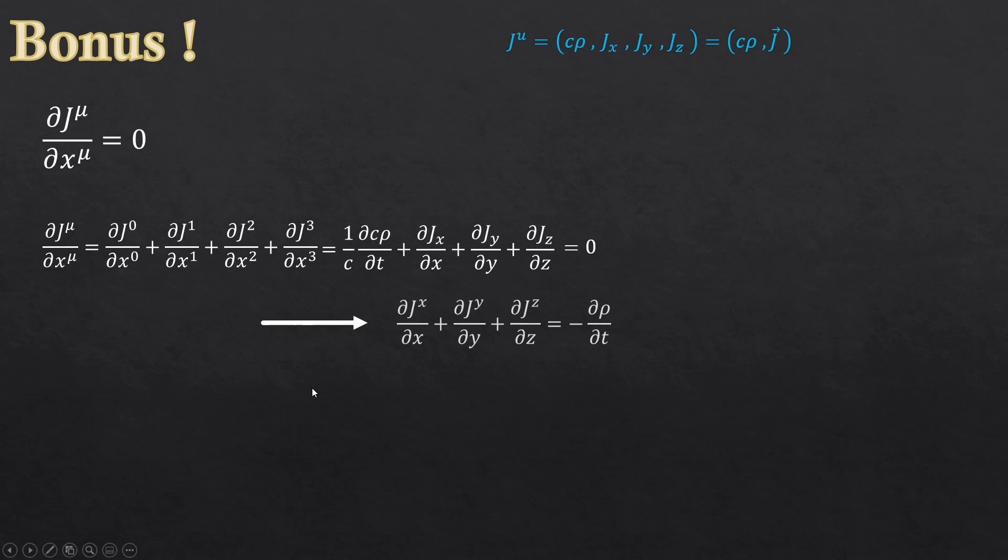Move the first term to the other side and see what you get. We have the divergence of j on the left side and minus d rho over dt on the right side. And this is a continuity equation from fluid dynamics. So, I hope you enjoyed this video. Please like and subscribe if you liked it. And I wish you all the best.